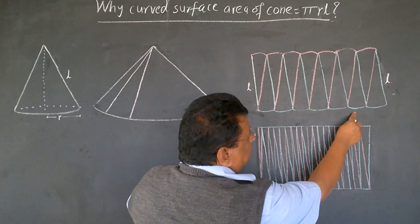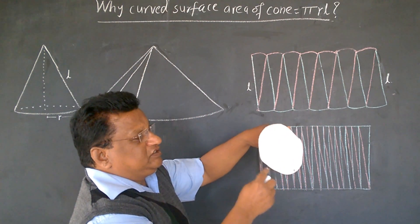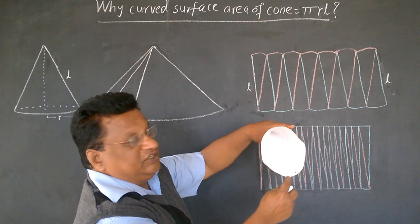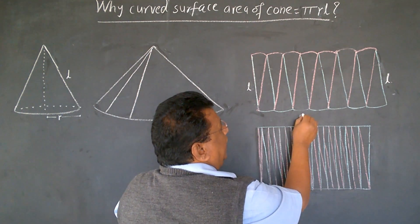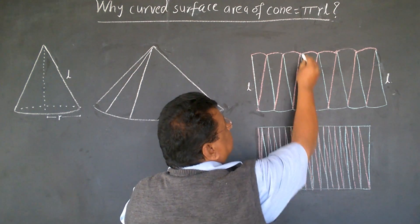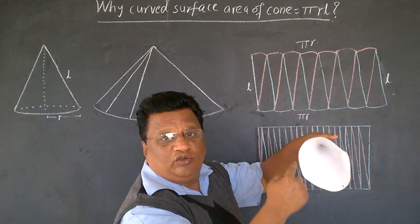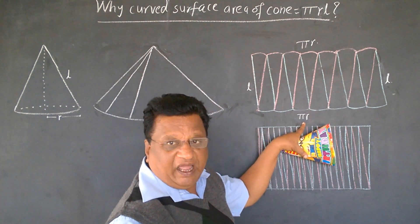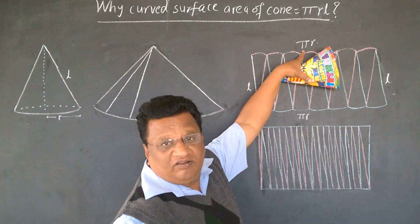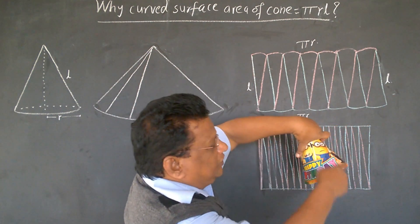So, this length, this length, and this length, this makes circumference of this base. So, this is pi r, and this is also pi r. Total length is 2 pi r. Half part is here, therefore pi r. Half part is here, pi r. And this is r. And this is slant height of this cone.